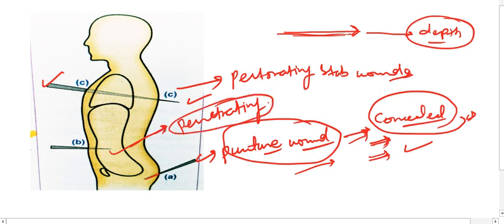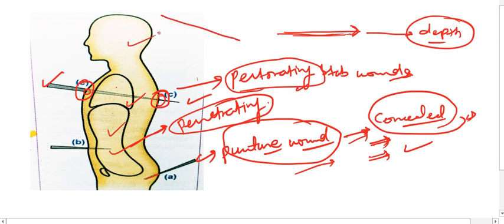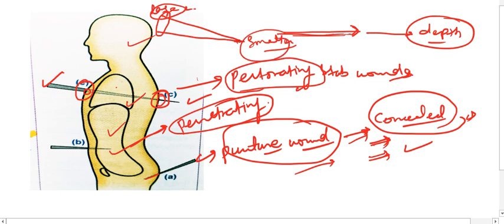Penetrating wounds are wounds which reach into a cavity — whether the peritoneal cavity, pleural cavity, cranial cavity, or any other cavity. Perforating wounds traverse through and through, so there is an entry wound as well as an exit wound. In firearm injuries there is a small entry wound and large exit wound, but in stab wounds the blade is gradually tapering, so the entry wound will be larger in most cases and the exit wound smaller. The three types of stab wounds are: puncture, penetrating, and perforating.